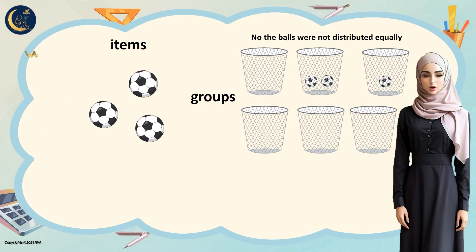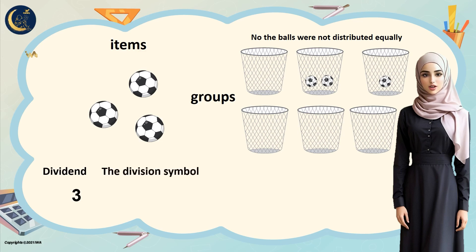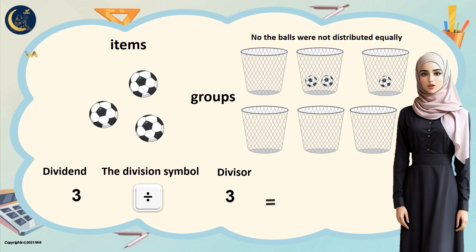Let's write the division sentence together. We write the dividend: how many balls? Three. Then the division symbol. Then the divisor: how many baskets? Three. Let's read the division sentence: three divided by three. How much did we put in each basket? One ball. So three divided by three equals one.